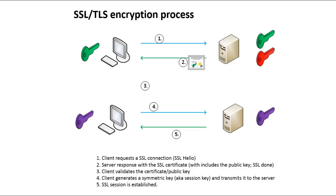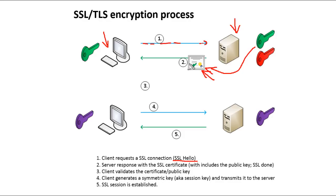Let's say my browser wants to establish an SSL session with securewebsite.com. My browser first sends an SSL hello message over the unsecured wire. In the second step, the server responds with a certificate, which includes its public key and is signed. At that point, I have the server's public key, and I authenticate and verify the signature of the certificate in the third step.